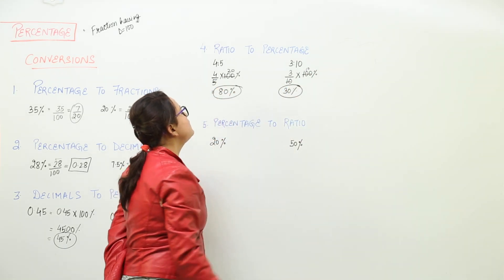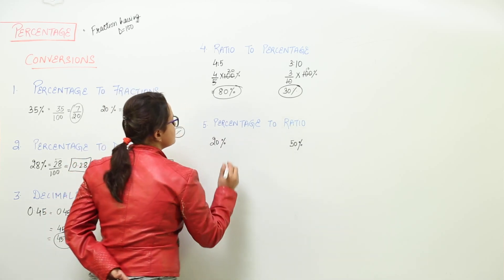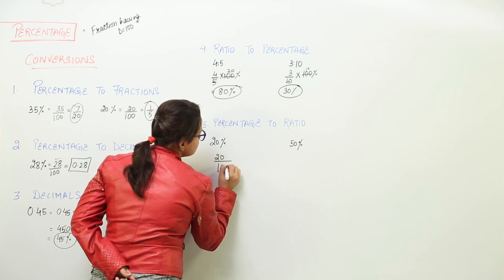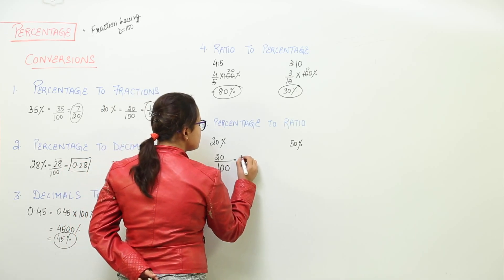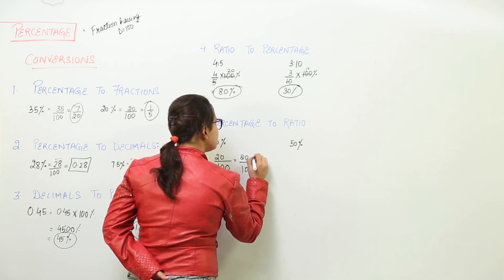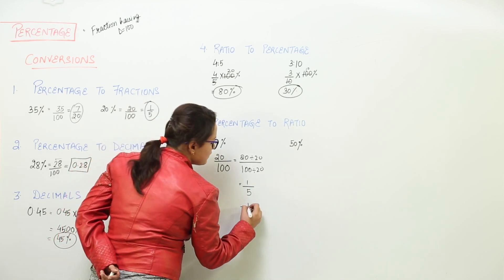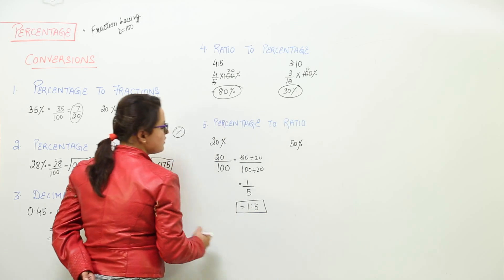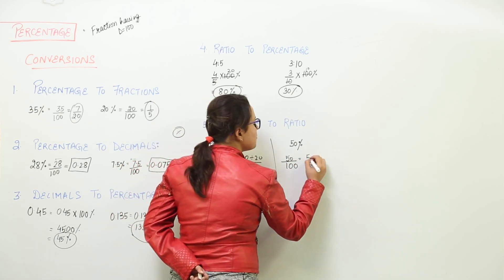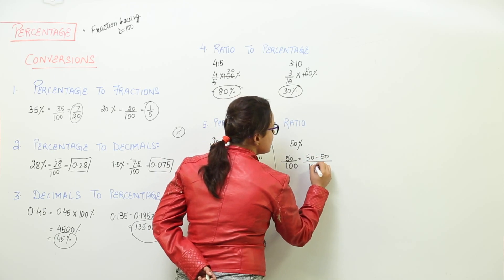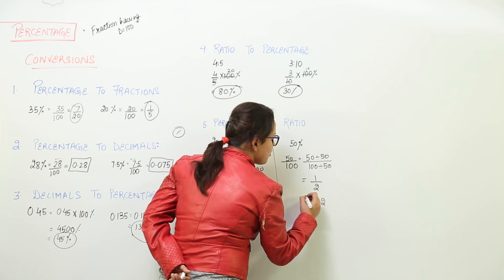So 80 percent and 30 percent are the respective percentages for the ratios 4:5 and 3:10. The last conversion is percentage to ratio. Get rid of the percentage sign and write 20 over 100. Taking common factors of 20 for both, we divide and get 1 over 5 as the simplest fraction, giving the ratio 1:5. For 50 percent, we write 50 upon 100, take out the common factor 50, and land up with 1 by 2, so the ratio is 1:2.